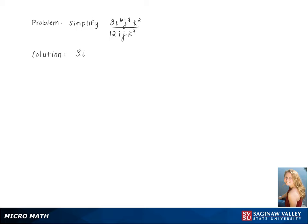To simplify the problem 3i to the 6th, j to the 9th, k squared over 12ijk to the 7th, we start by leaving the coefficient 3/12 out front, multiplying it by each variable, subtracting the exponents of each.